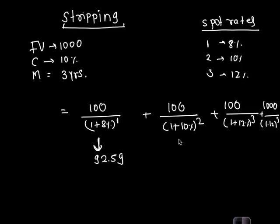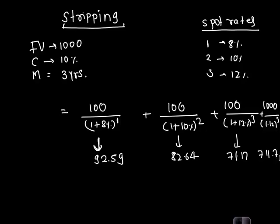The second term is approximately 82.64, the third term (100 divided by 1.12 cubed) is 71.17, and the last is 711.7. The total of all four components is 958, which is the value of the bond.